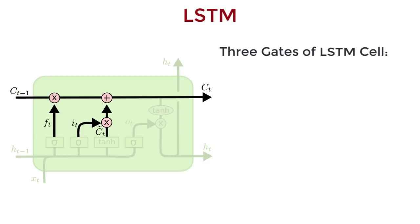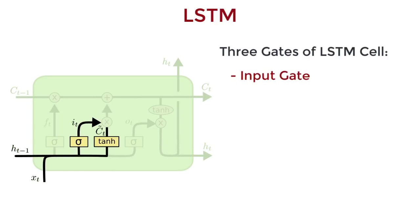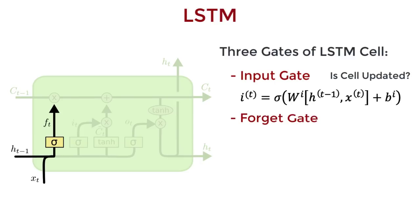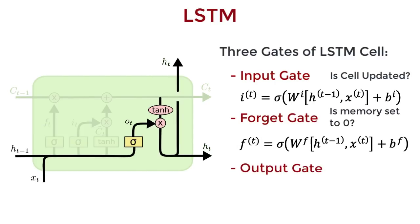Each unit has three gates of the same shape. Think of each of these as binary gates. The input gate controls whether the memory cell is updated, the forget gate controls if the memory cell is reset to zero, and the output gate controls whether the information of the current cell state is made visible.